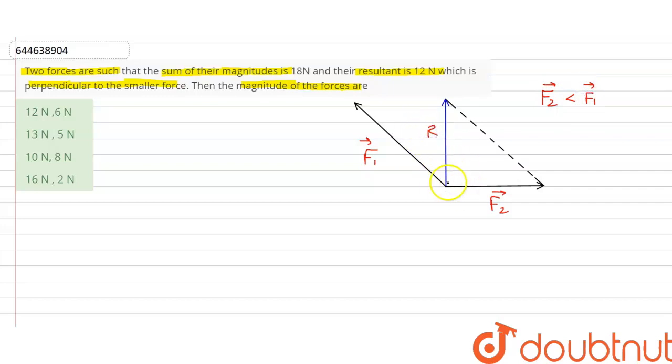So in this question we have to assume that F2 vector is smaller than F1 vector. So this is our resultant and this is perpendicular to smaller vector. Now it is also given in the question that the sum is 18 Newton, so F1 vector plus F2 vector is equal to 18 Newton.